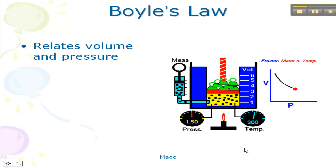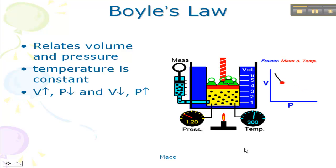This is what's called an indirect relationship. If the volume is increased, then the pressure decreases. If the volume is decreased, then the pressure increases. And the graph does look like this as a curve. So this is called Boyle's Law, and know that volume and pressure are indirectly related.